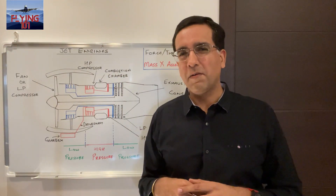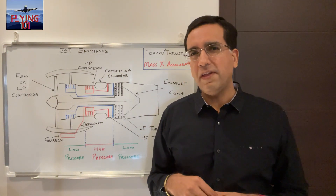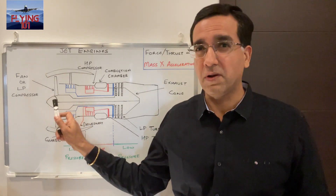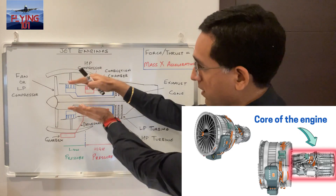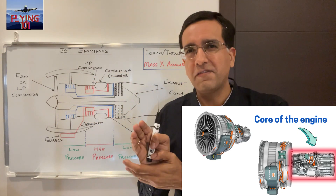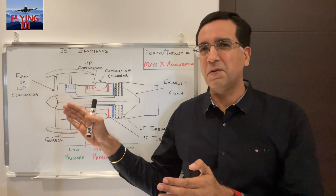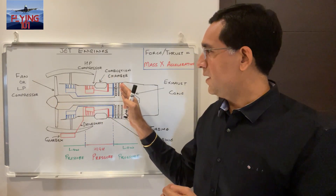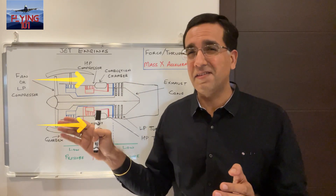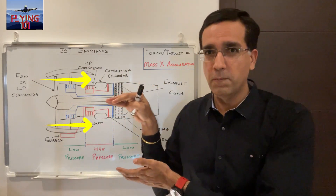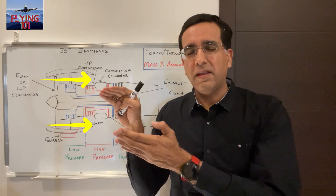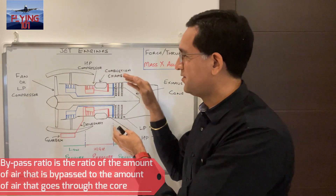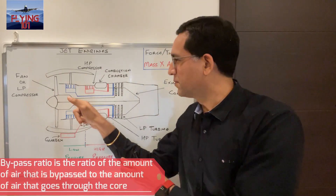Let's understand the concept of bypass ratio of a jet engine. Not all the air being inducted from the front of the engine goes through the hot core. In other words, not all the air inducted goes through the compressor, combustion chamber, the turbine and the exhaust. Some of the air being sucked in is simply bypassed around the core. The bypass ratio is the ratio of the amount of air that is bypassed to the amount of air that passes through the core.